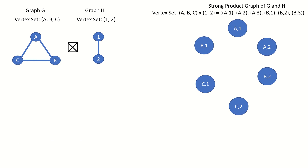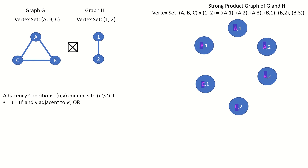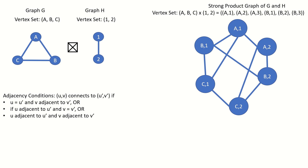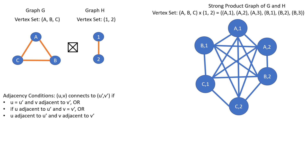There are three conditions for adjacency in a strong product graph. The first condition: two vertices are connected if their left entries are the same vertex in graph G and their right entries are adjacent vertices in graph H. The second condition: two vertices are connected if their right entries are the same vertex in graph H and their left entries are adjacent vertices in graph G. The third condition: two vertices are adjacent if their left entries are adjacent in graph G and their right entries are adjacent in graph H. In other words, if two vertices meet any condition for adjacency in a Cartesian or tensor product of those graphs, then they are connected.